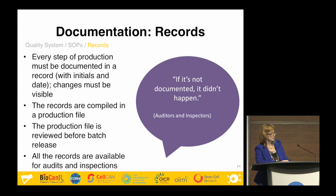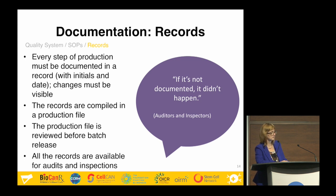Records are compiled in a production file. If a product took two weeks to produce, you'll have a pile of 10 centimeters of records. They are all reviewed before batch release — before the quality control department can say this product is ready for release into clinical trial. The records are afterwards kept available for audits and inspections, which can come from the company funding your clinical trial or be internal audits where quality assurance verifies that what is written in the SOP is actually being done.